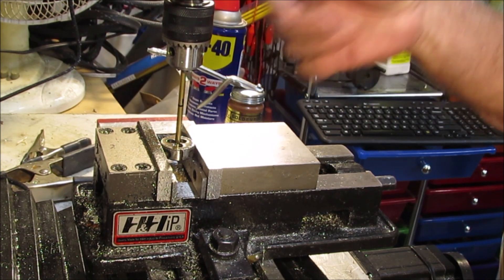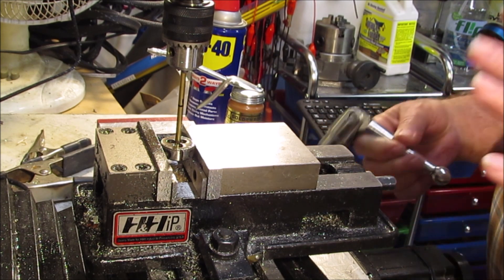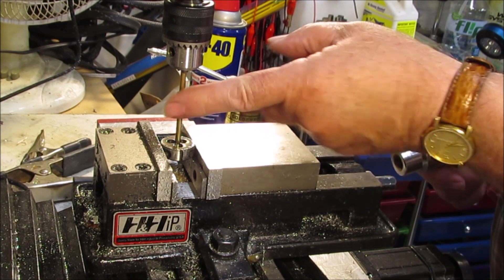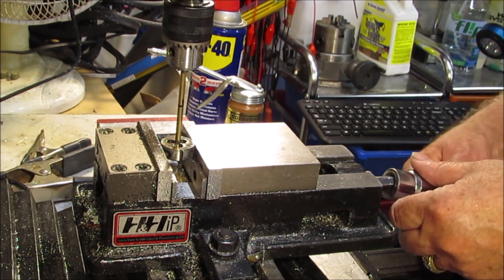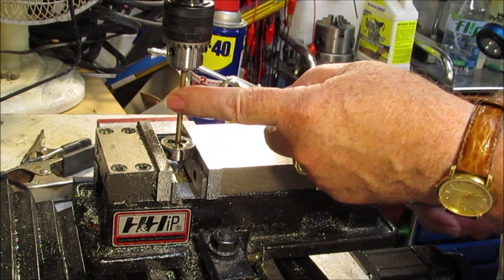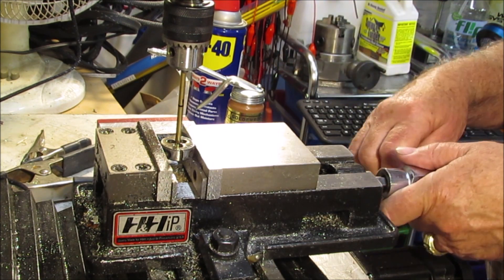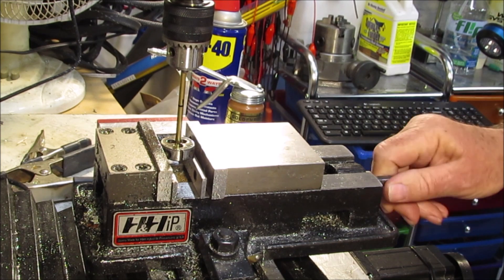And I know this from experience because I do this with taps, okay? Except this would be the tap and this would be the thing I'm tapping. Right now it's reversed. This is the thing I want to put a thread on and this is the die. But anyway, it's always best to take it out of the device, loosen the device.